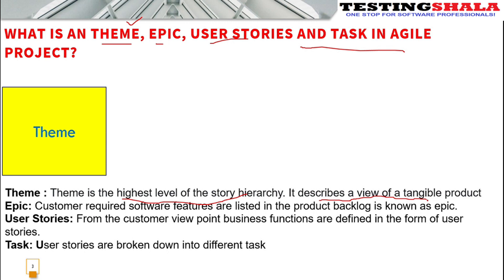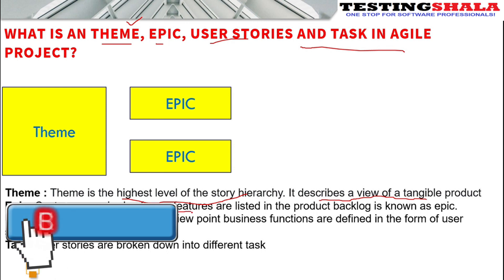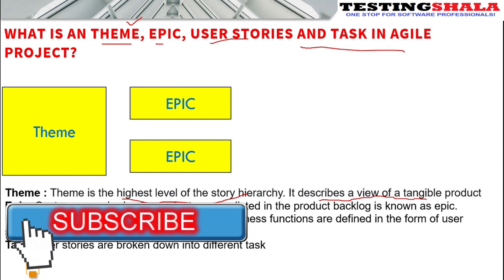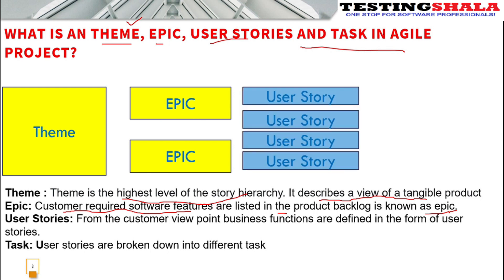The next one is epic. The theme is further divided into epics. An epic normally covers whatever requirements we get from the customer which are related to software features, and these are listed in the product backlog. That is known as an epic.